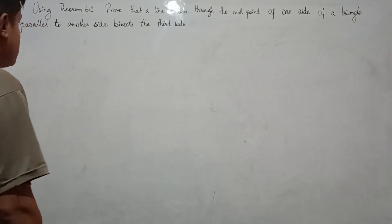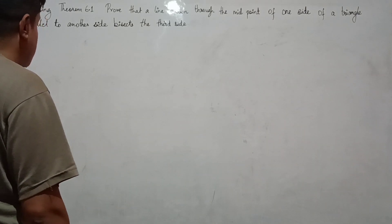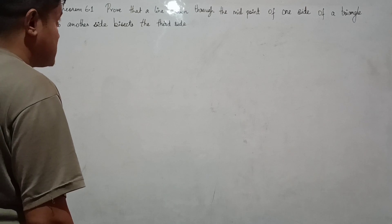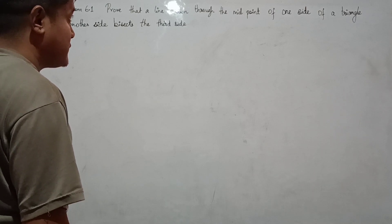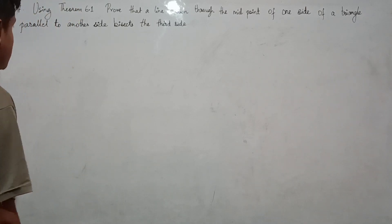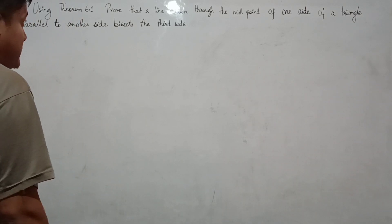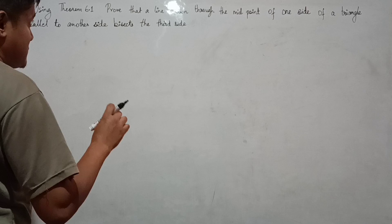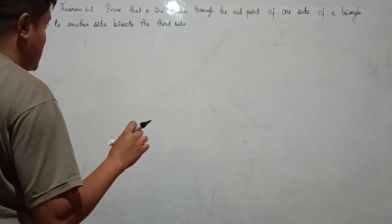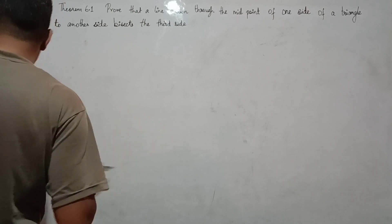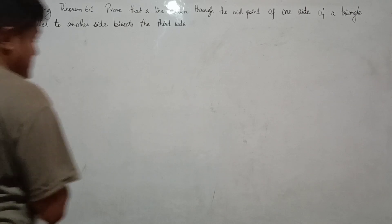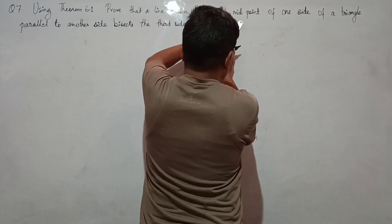Number seven, using Theorem 6.1, prove that the line drawn through the midpoint of one side of a triangle parallel to another side bisects the third side. So you have a midpoint, draw a line parallel, and the third side will be divided into two equal parts. Let us draw our triangle.